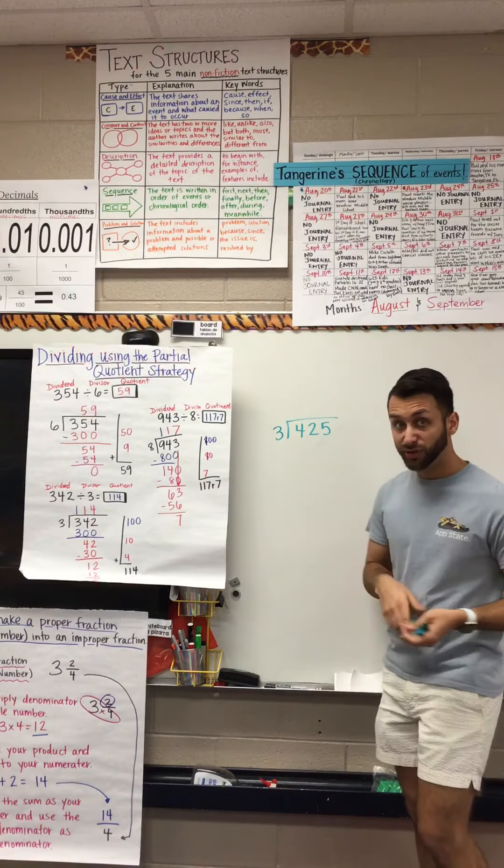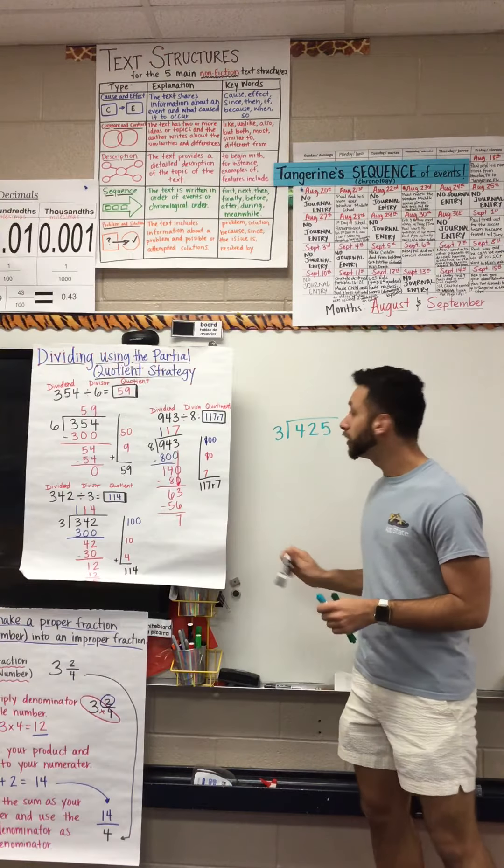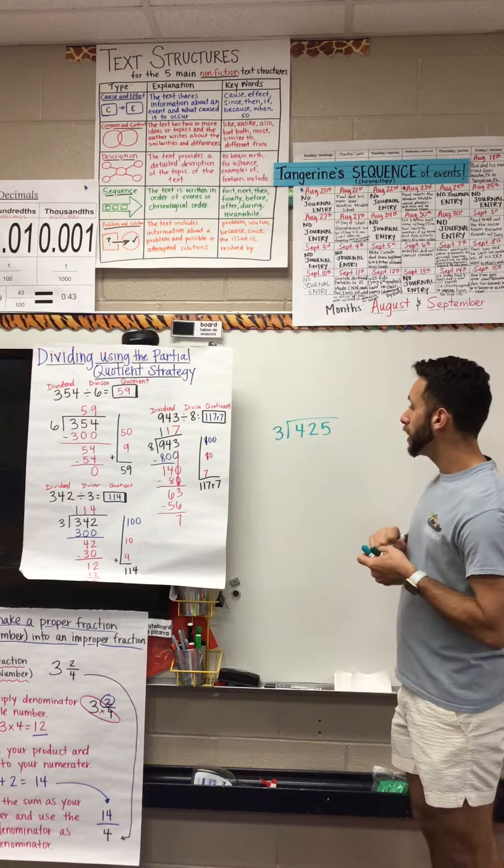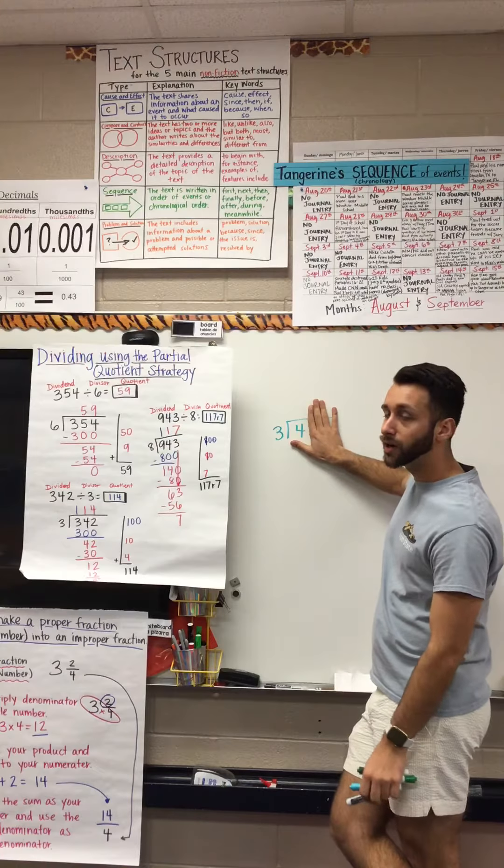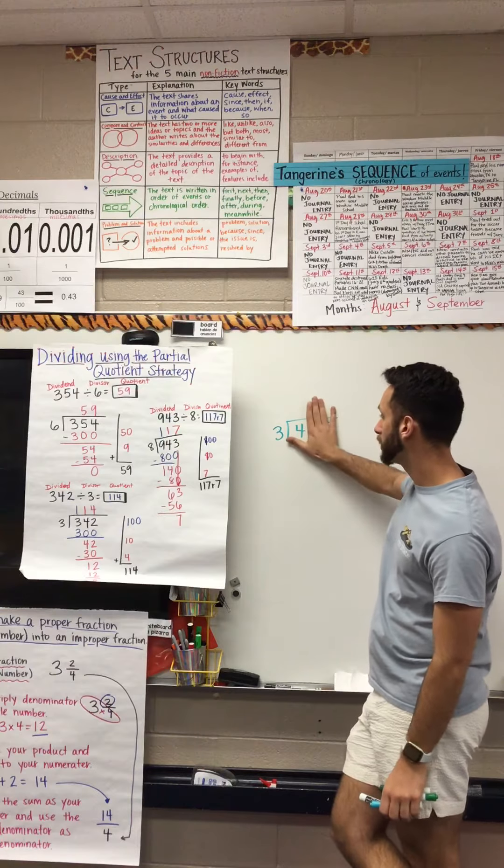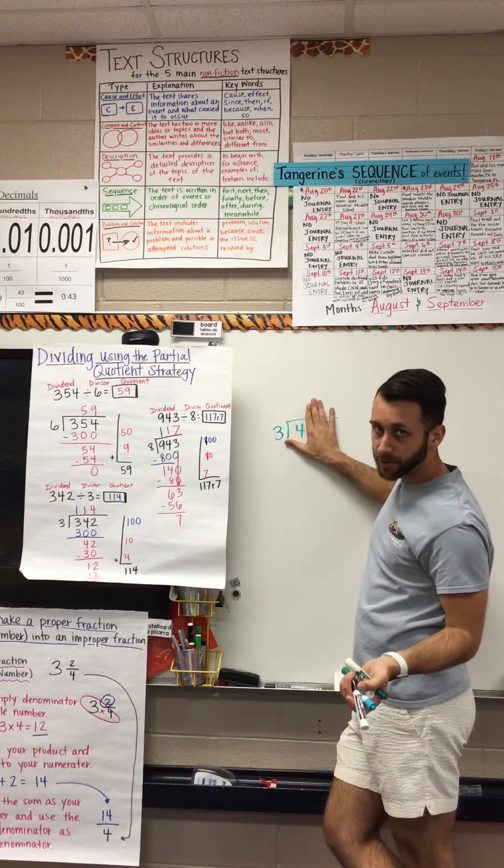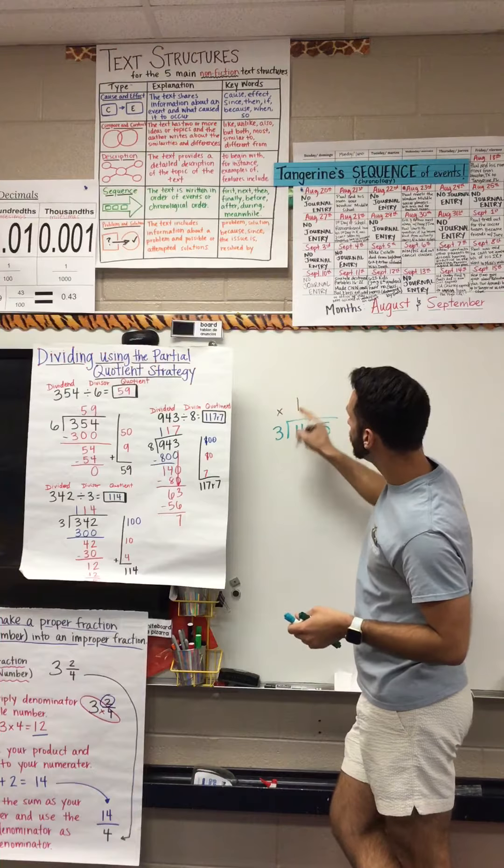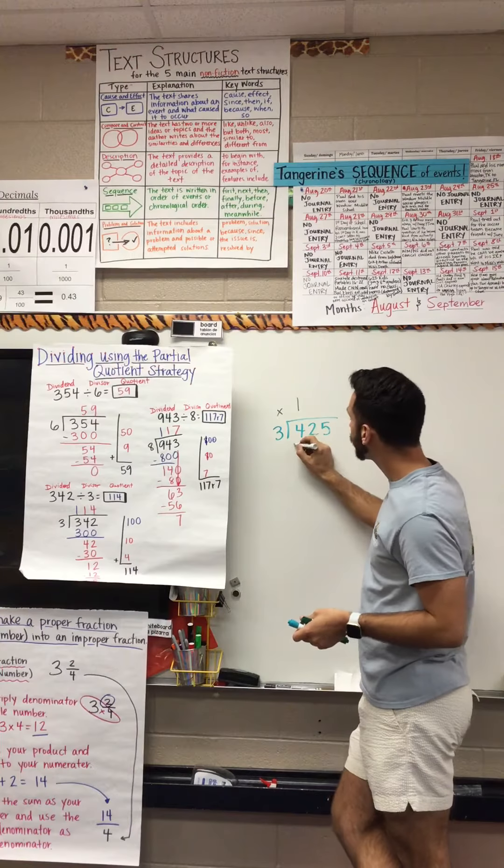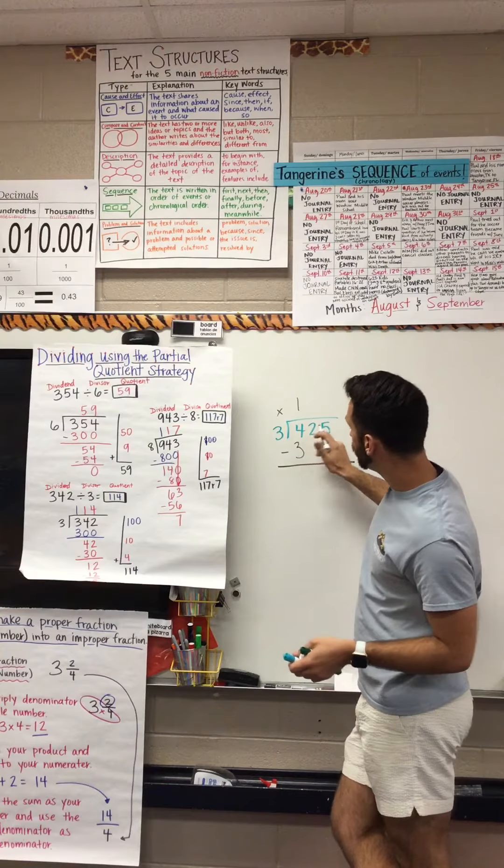So again, always cover your numbers that are past the first number. For this one, three goes into four how many times? One. So one times three equals three. Subtract this. So then you do 4 minus 3 equals 1. Pretty simple.